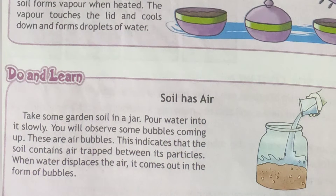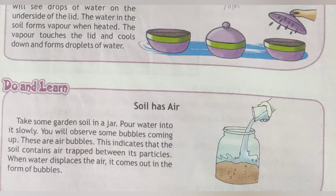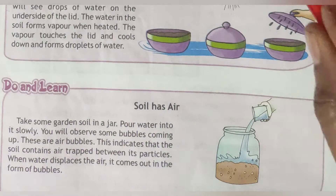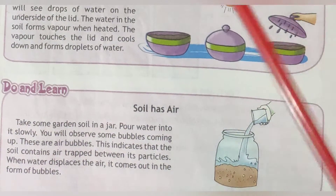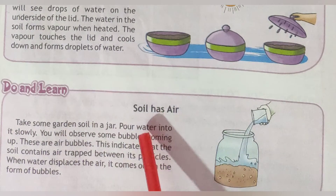Hello children, welcome to our new video. I am Sudha. Today we learn the part of chapter 50 from your book 'New Science Plus.' In the third video we learned that soil has layers of gravel, sand, clay, and humus, and that soil has water. Now in this video we learn about soil having air.